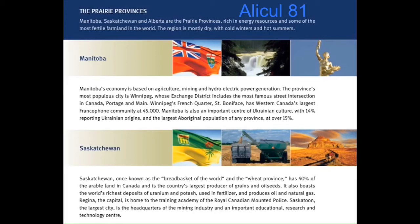Saskatchewan, once known as the breadbasket of the world and the wheat province, has 40% of the arable land in Canada and is the country's largest producer of grains and oilseeds. It also boasts the world's richest deposits of uranium and potash, used in fertiliser, and produces oil and natural gas. Regina, the capital, is home to the training academy of the Royal Canadian Mounted Police. Saskatoon, the largest city, is the headquarters of the mining industry and an important educational, research and technology centre.